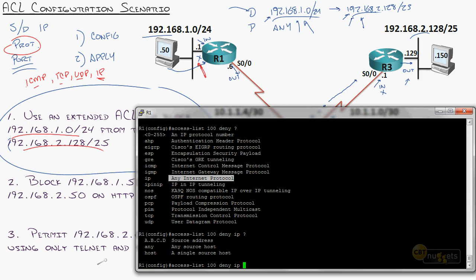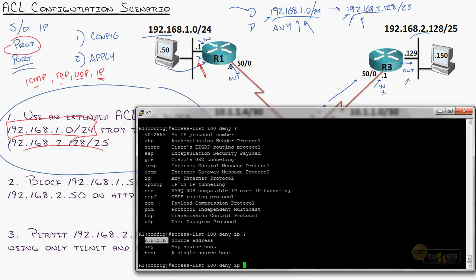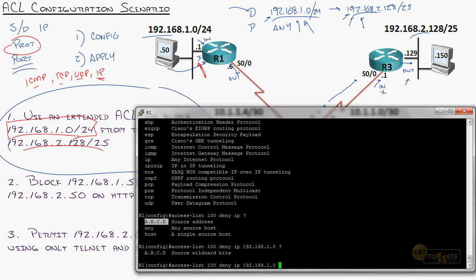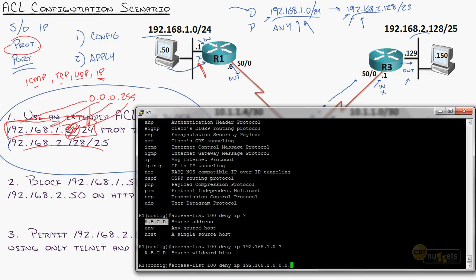Now it asks: what source address would you like to deny from? I'm not looking for a specific host — I've been told to block this network. So I'll say the source is 192.168.1.0. It says give me something more — are you looking for just a host or the whole subnet? That's where our wildcard mask comes in. This is a Class C subnet mask — flip it completely backwards: 0.0.0.255. That says look at 192.168.1 — I don't care about that last octet.